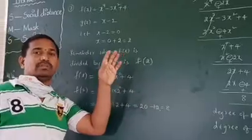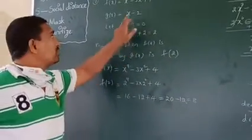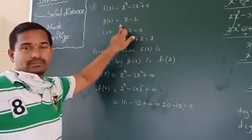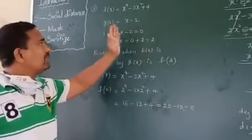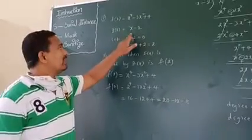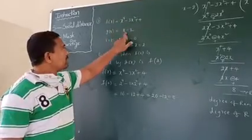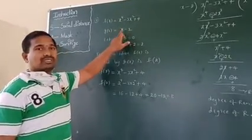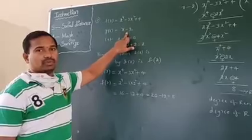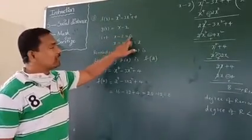Actual division means use the division algorithm to divide the polynomial f of x by g of x. First, let us find the remainder using the remainder theorem. Here f of x is divided by x minus 2, so first find the zero of x minus 2. To find the zero of x minus 2, take x minus 2 equal to 0.